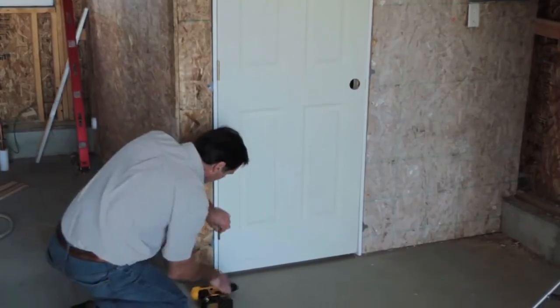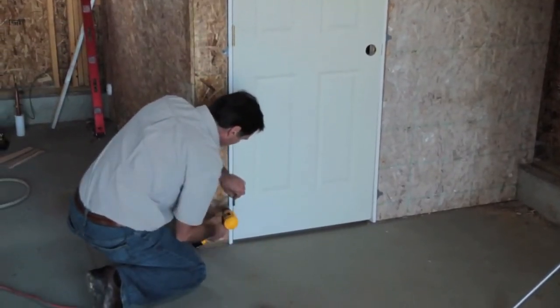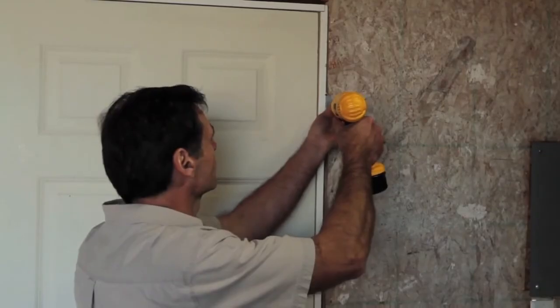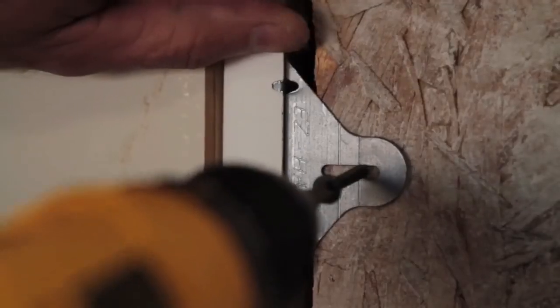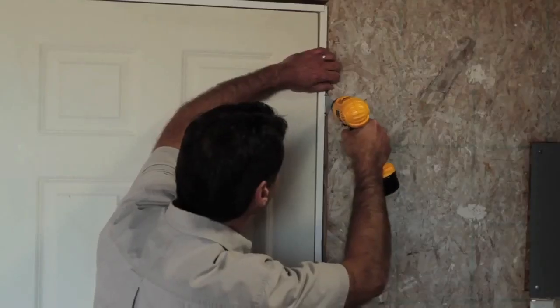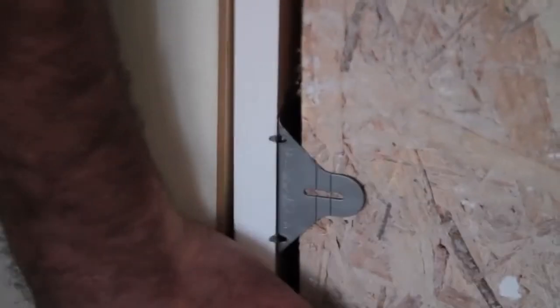Once you do that, proceed to the latch side. Look at the top corner to make sure your gap is even, start at the top, and keep your reveal even all the way down the door.